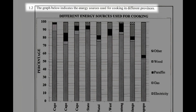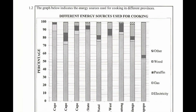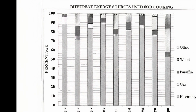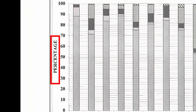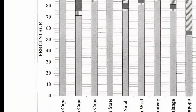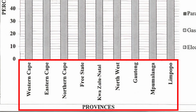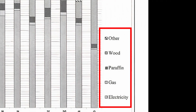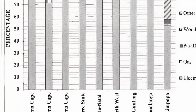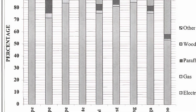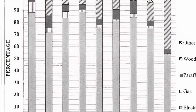Question 1.2 states that the graph below indicates the energy sources used for cooking in different provinces. When we analyze the information given in the graph, we see that percentages are given on the y-axis, the provinces of South Africa are represented on the x-axis, and the keys representing the type of energy sources are given to us on the right of the graph. We should also recognize that the graph given is a vertical stacked bar graph.